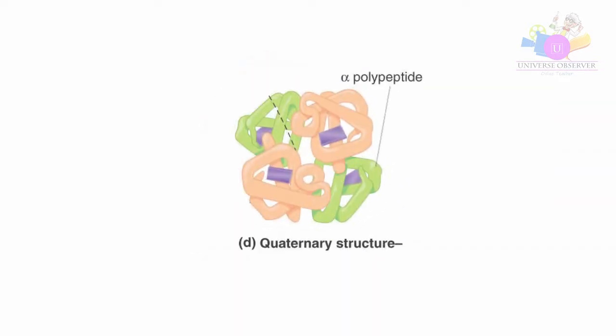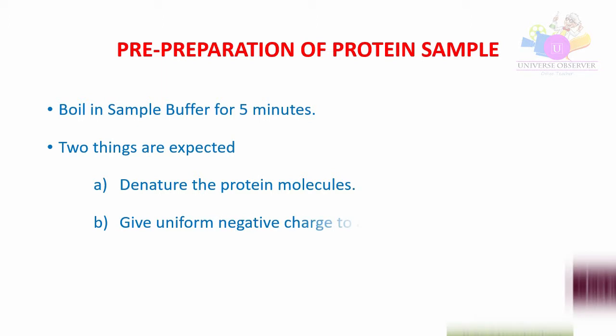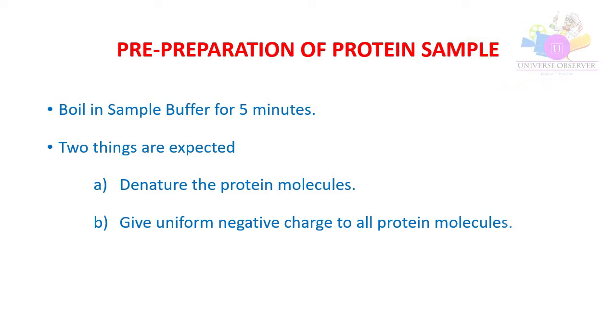The quaternary and tertiary protein structures have higher molecular weight and they are folded with positive and negative charges. So the protein samples require preparation before SDS page. Two things are expected from preparation of protein samples: denature the protein molecules to simple structure, and give uniform negative charge to all protein molecules. For that the protein samples should be boiled for five minutes in sample buffer.